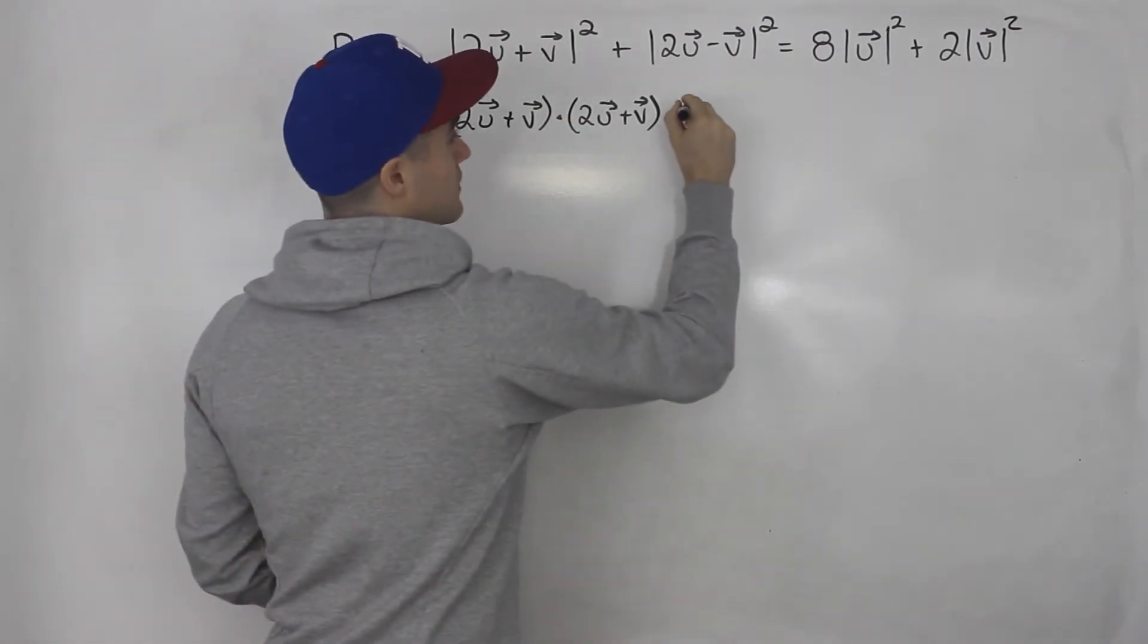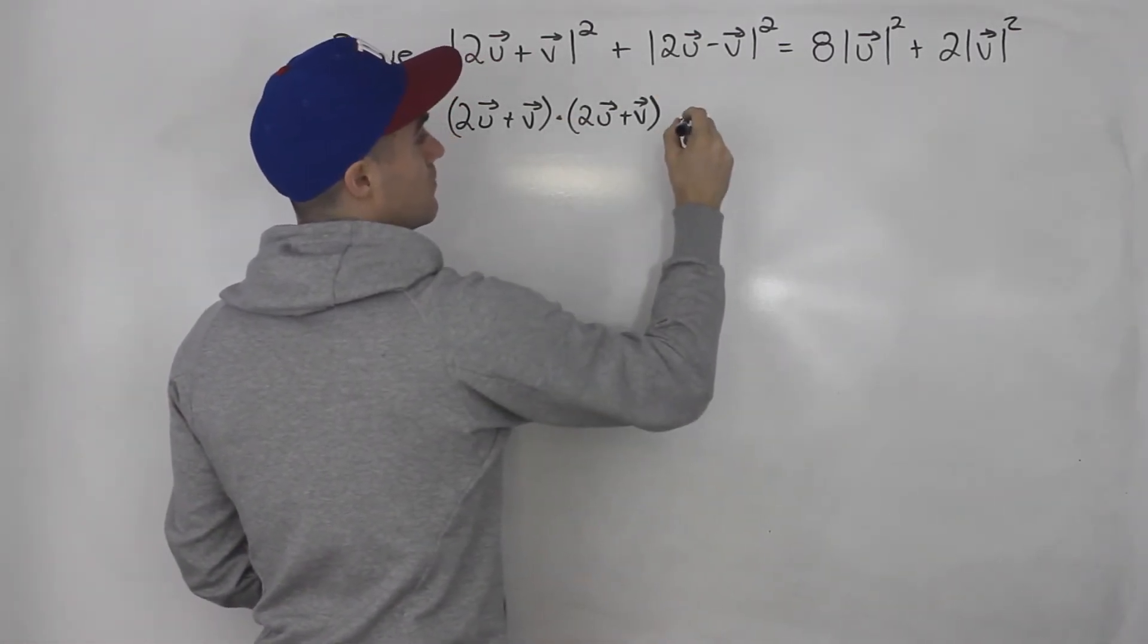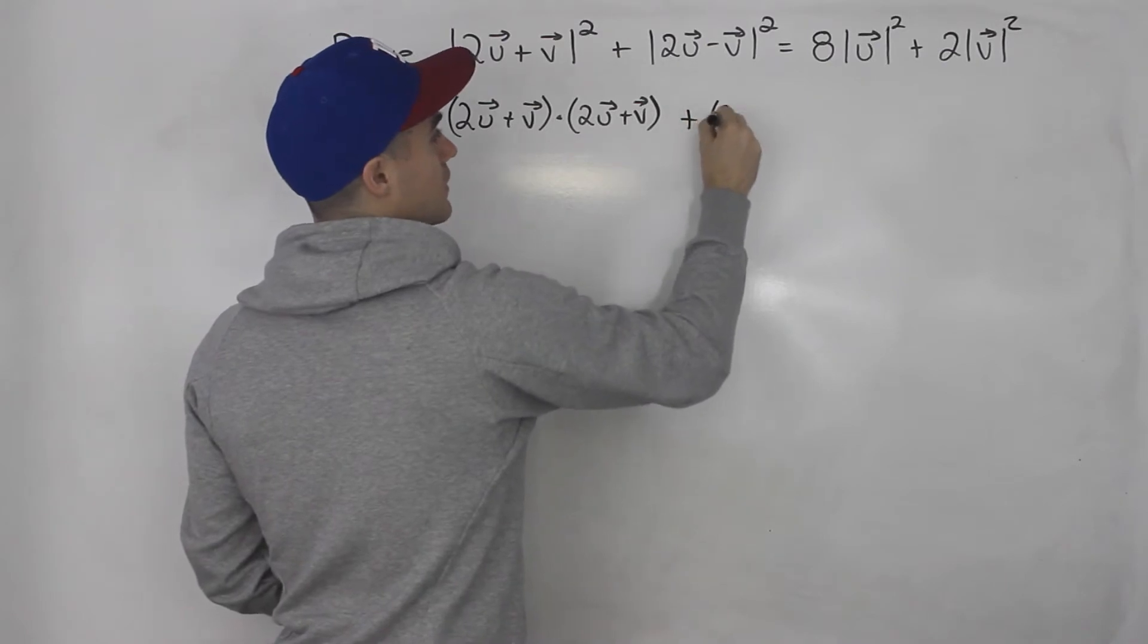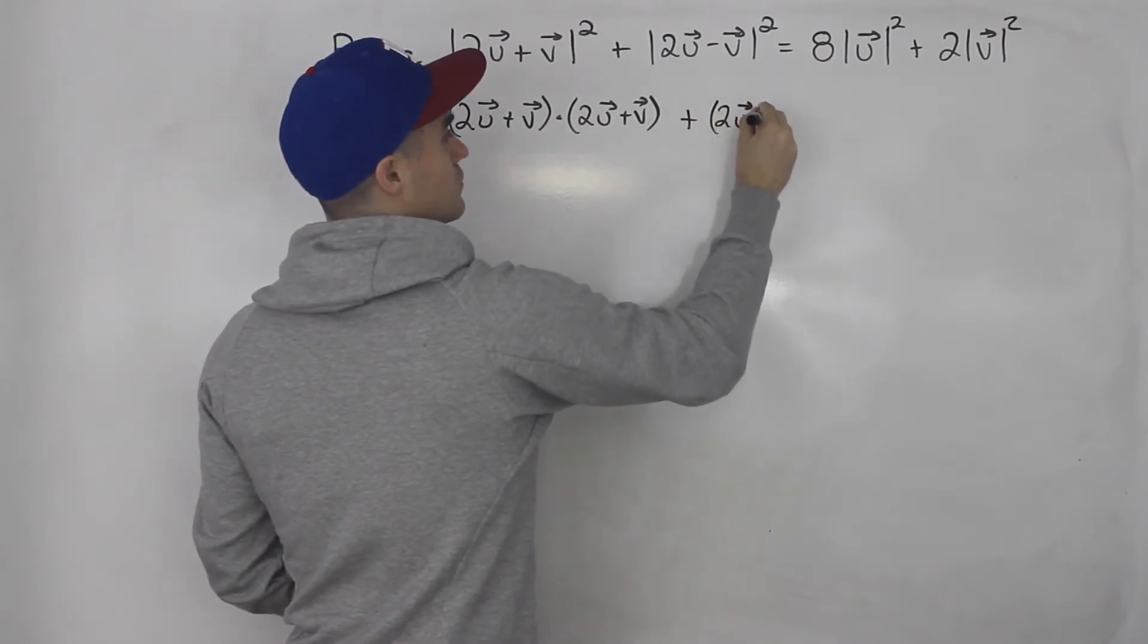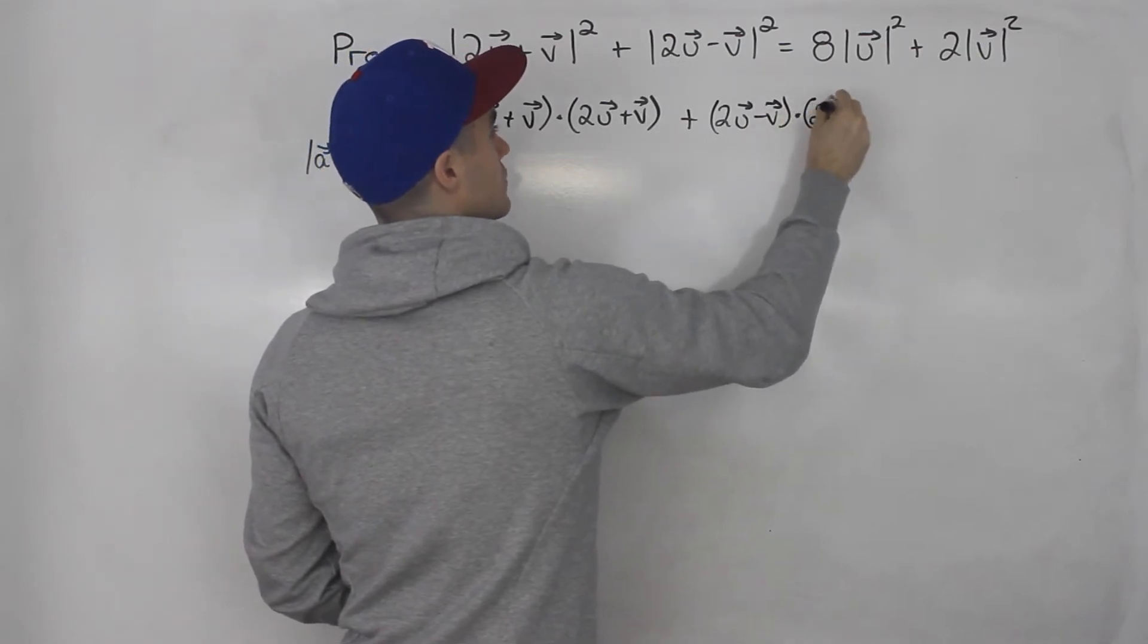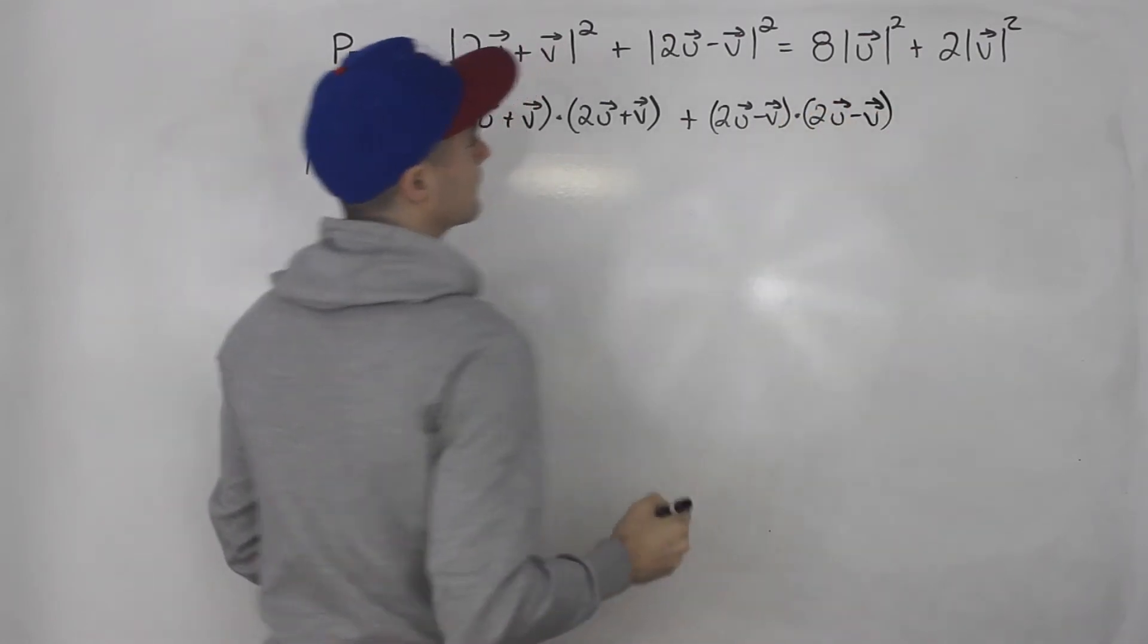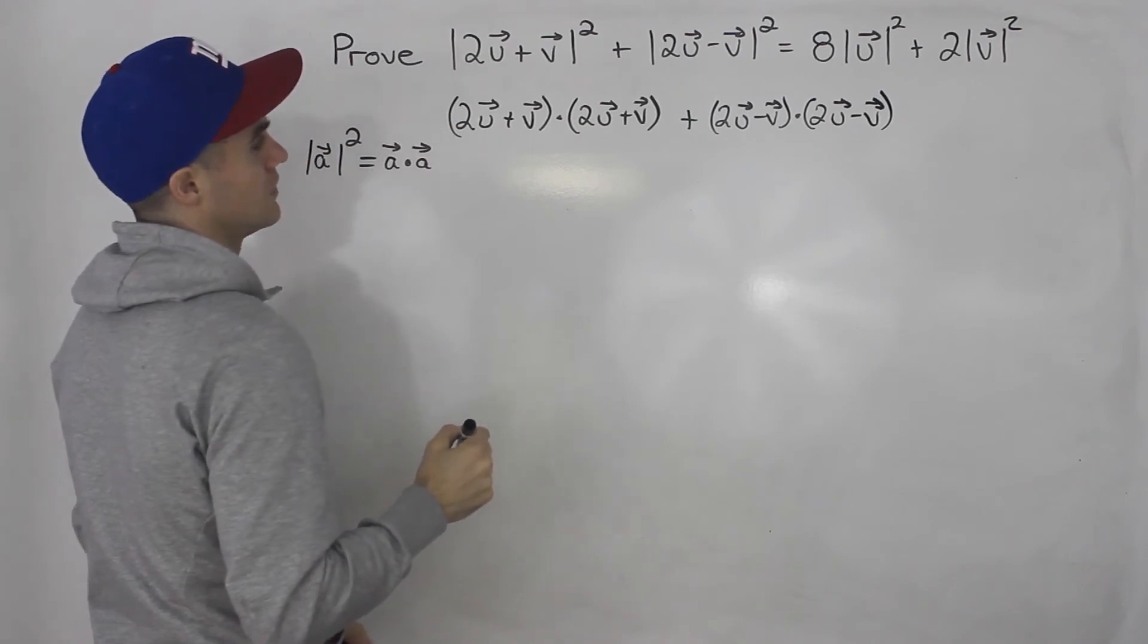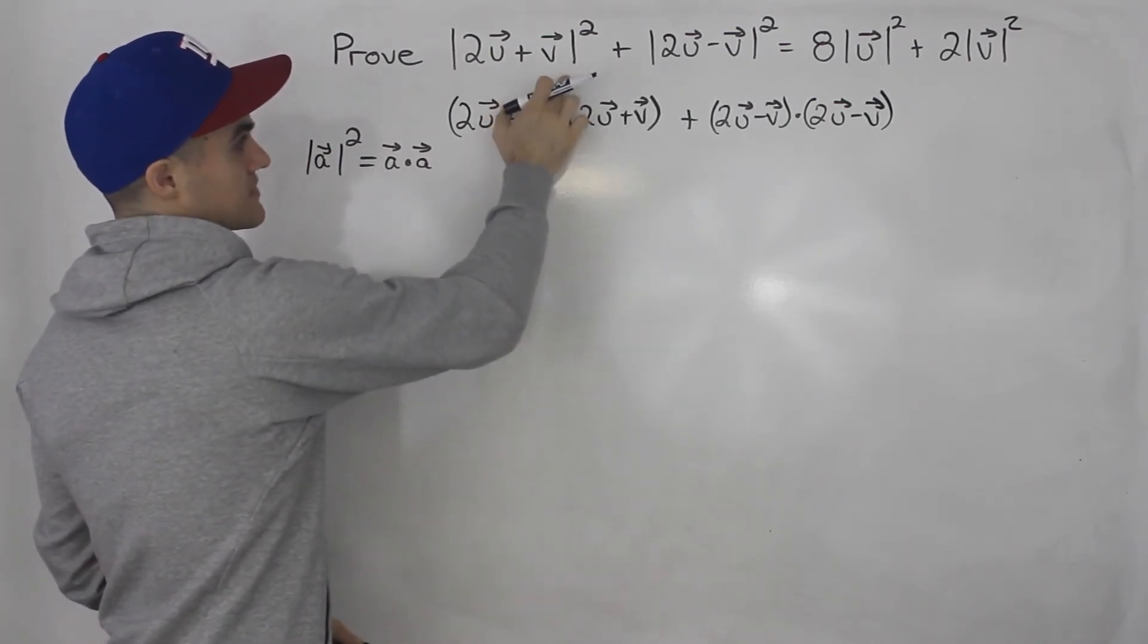And then same thing here with this 2u minus v. So we'd have 2u minus v dot 2u minus v. Like that. So I'm just working with that left side here.